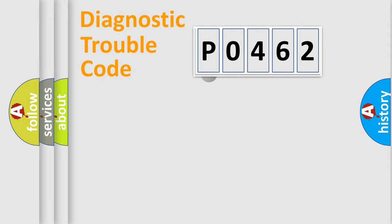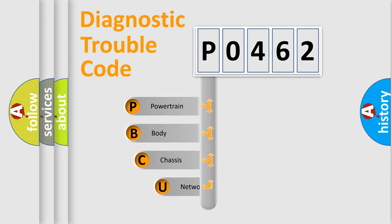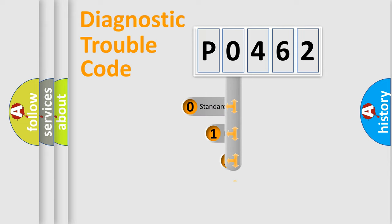First, let's look at the history of diagnostic fault code composition according to the OBD2 protocol, which is unified for all automakers since 2000. We divide the electric system of automobile into four basic units: Powertrain, body, chassis, and network. This distribution is defined in the first character of the code.